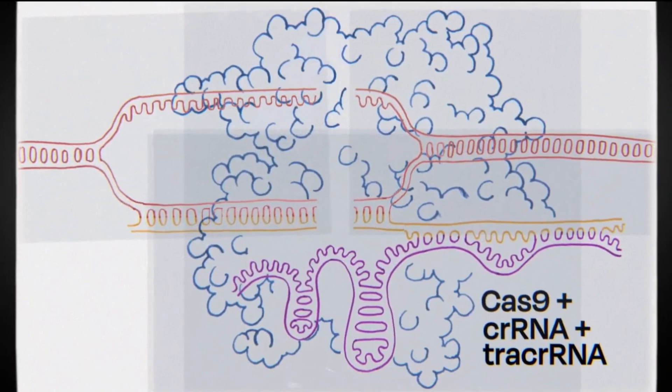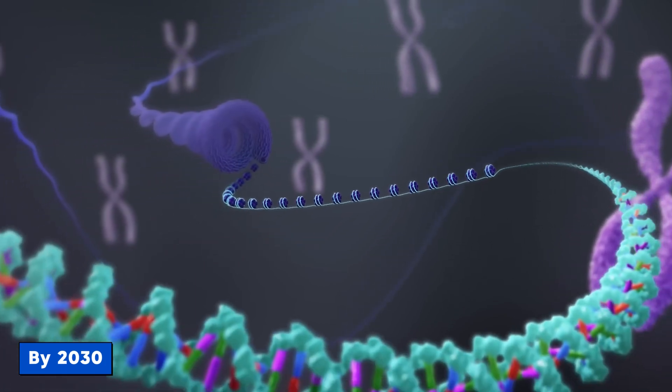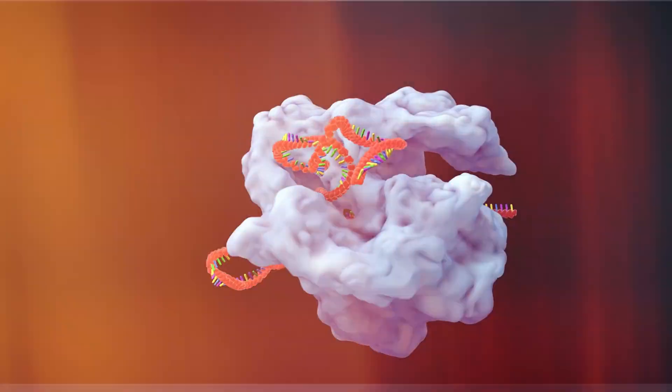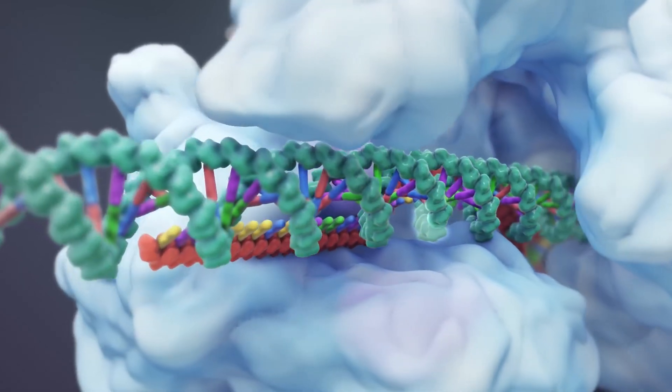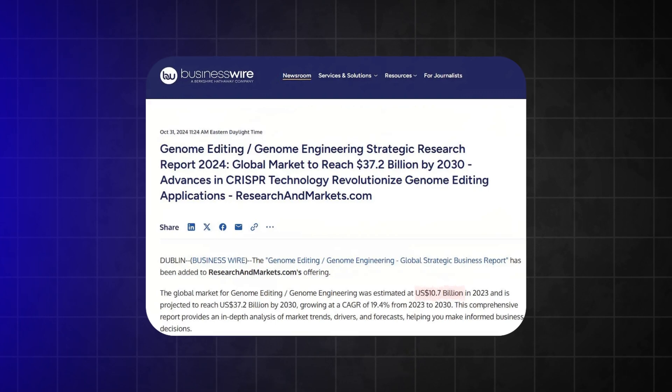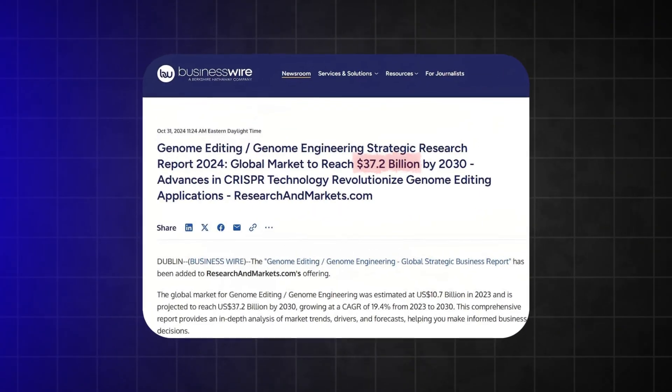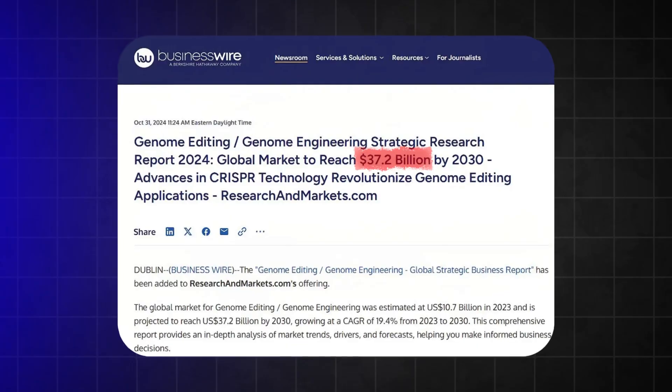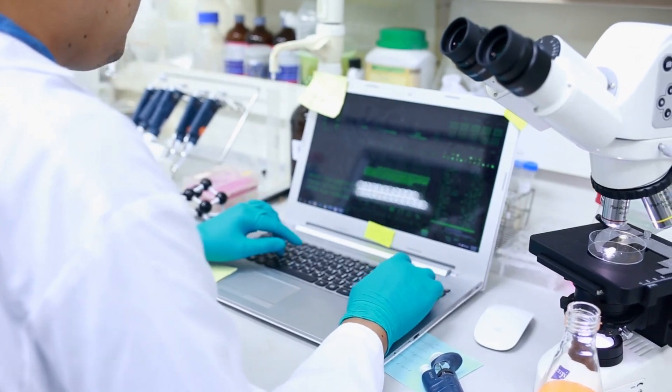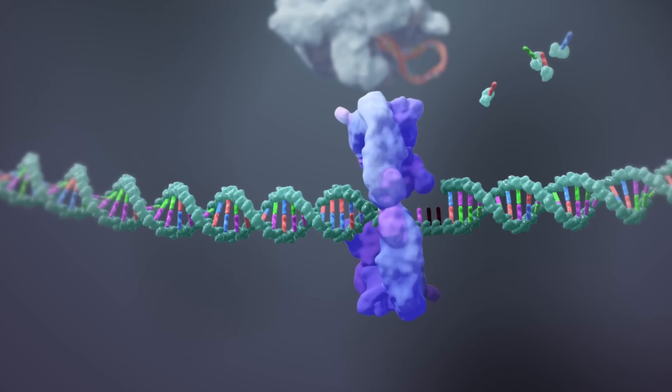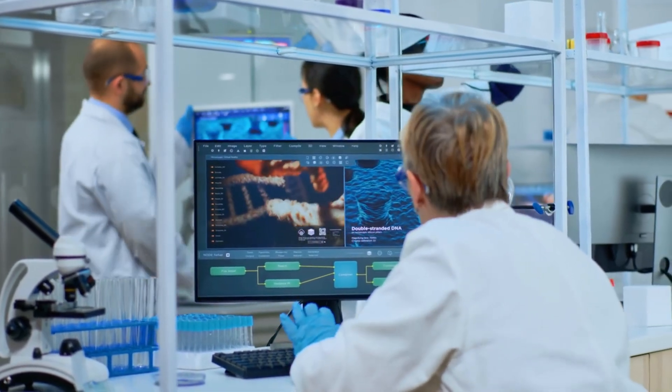Right now, there are clinical trials using CRISPR to treat people with sickle cell anemia and various cancers. By 2030, this could be totally mainstream medicine. Instead of just managing symptoms for life, we could be curing genetic diseases permanently by fixing the actual source code of our bodies. That's next-level stuff. The global market for genome editing, including CRISPR technologies, was estimated at $10.7 billion in 2023 and is projected to reach $37.2 billion by 2030, growing at a compound annual growth rate of 19.4%. This growth is driven by increasing investment in biotechnology, the rising prevalence of genetic diseases, and ongoing advancements in gene editing technologies. So, we're confident that this revolution won't stop moving forward.